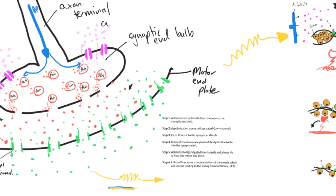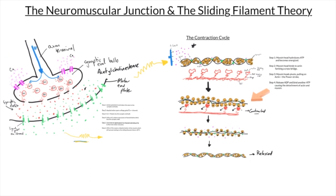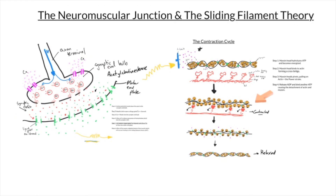How do we get rid of acetylcholine? One way is through enzymatic degradation, and the enzyme we use is called acetylcholinesterase. That sums up our neuromuscular junction and sliding filament theory. I hope you found this tutorial helpful.